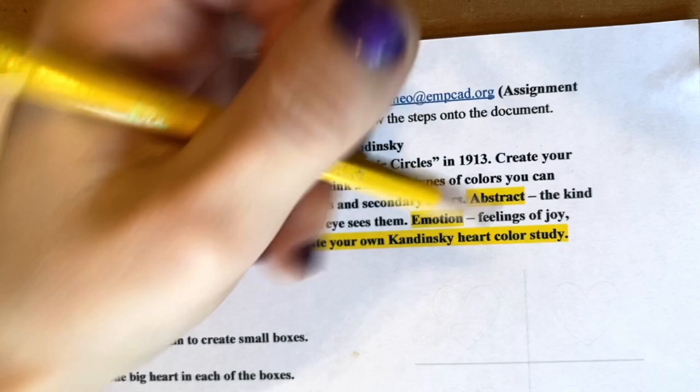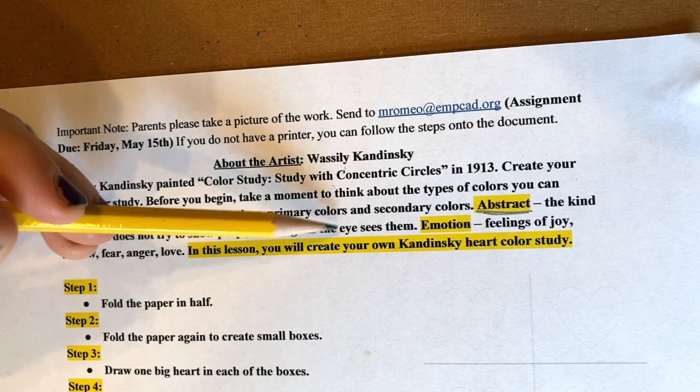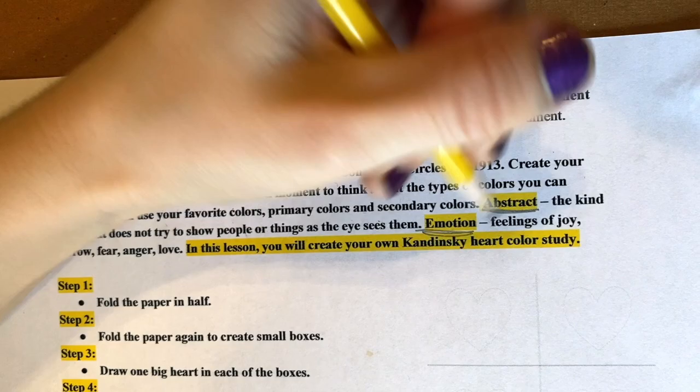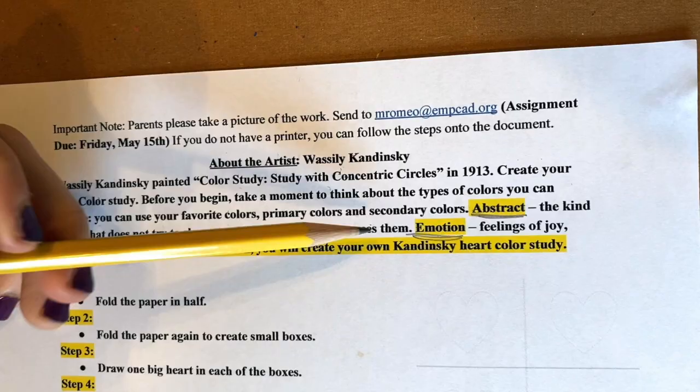Here are two vocabulary words we're going to learn about today. Abstract means the kind of art that does not show people or things as the eyes see them — abstract means non-realistic. Emotion is feelings of joy, sorrow, fear, anger, or love.